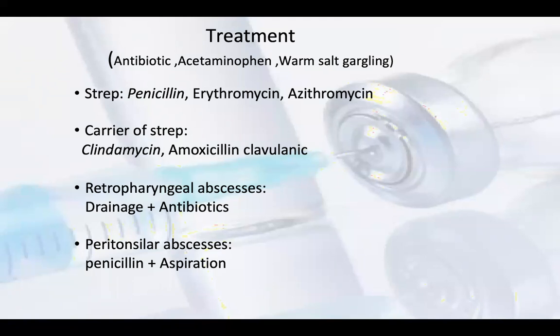If carrier-state Streptococcus, then clindamycin or amoxicillin-clavulanate (augmentin) can be used, with other brands of amoxicillin-clavulanic acid available. For retropharyngeal abscesses, drainage is required along with antibiotics. For peritonsillar abscesses, penicillin and aspiration with a soft needle for drainage is needed.